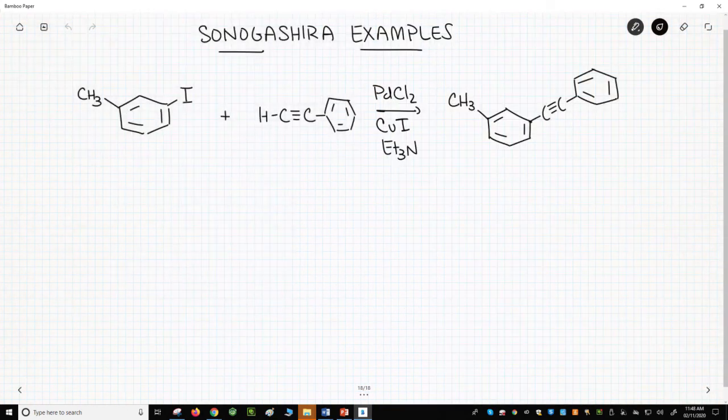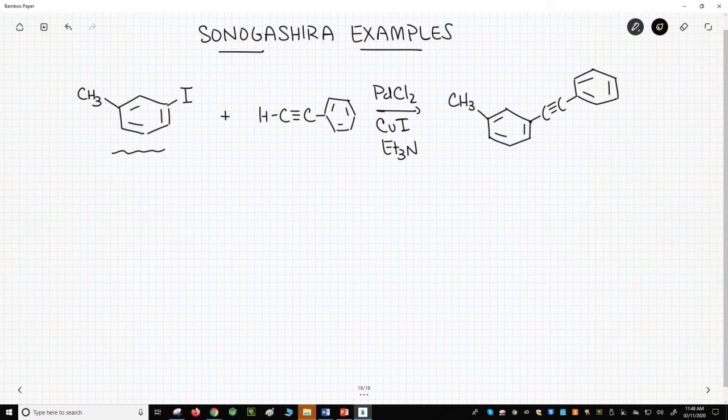Here is a sample Sonogashira coupling between an aryl iodide and an alkyne. This is called phenylacetylene, and it's a terminal alkyne.